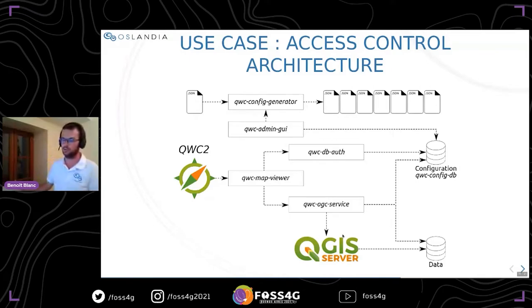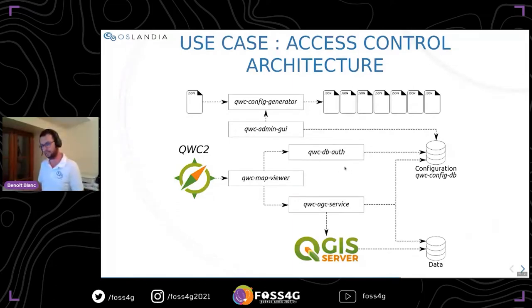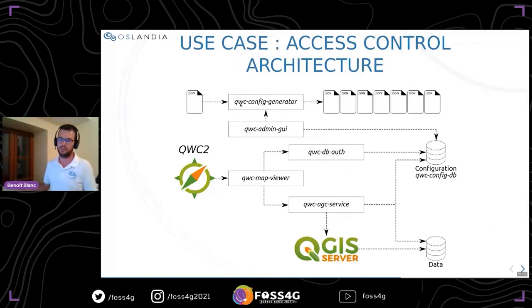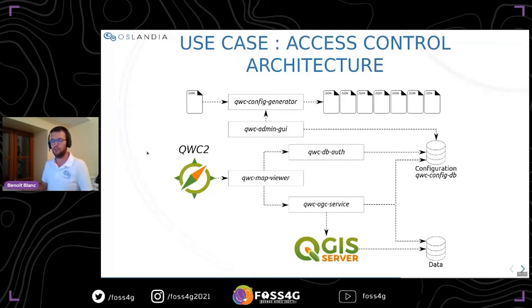Finally, you have a service to generate configuration for all these services from a single JSON file. There are also interesting features recently implemented in the administration panel by Sourcepol — a kind of plugin named Thames that helps you configure all of your projects in the app with a user interface, making it quite easy to change parameters in your application. I have also added the possibility to upload new QGIS projects or files on the server with this interface.